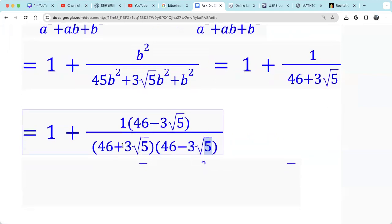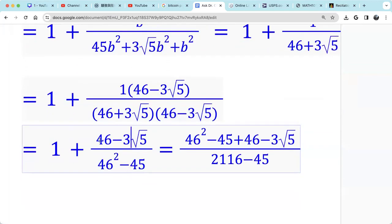Then by difference of two squares, I get 46 squared minus 3 radical 5 squared. I get 46 squared minus 45 in the denominator. In the numerator, I have just 1 times 46 minus 3 radical 5.